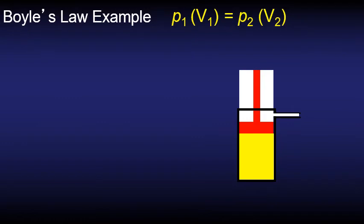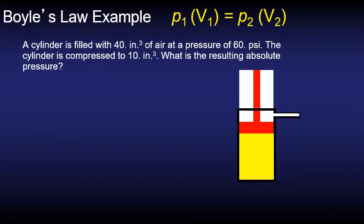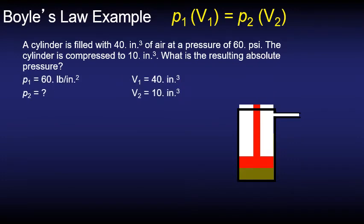Let's take a look at an example of how Boyle's law could be used. The question here is a cylinder is filled with 40 inches cubed of air at a pressure of 60 psi. Note that pressure is the gauge pressure. The cylinder is compressed to 10 inches cubed. What is the resulting absolute pressure? So let's start by jotting down all of the known values.